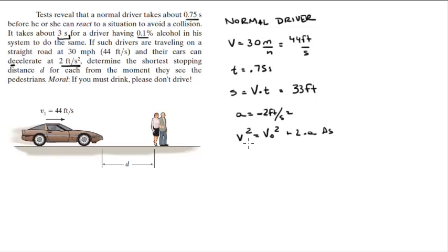Now the final velocity when you reach stop is going to be 0. The initial velocity is 44 squared plus 2 times negative 2 is the acceleration times delta s. And delta s is how much distance still elapses when he starts to stop. So when you solve for delta s, you get that this is equal to 484 feet.